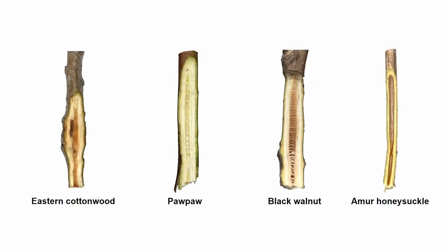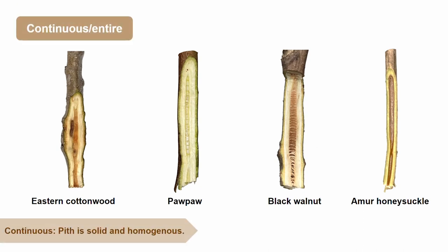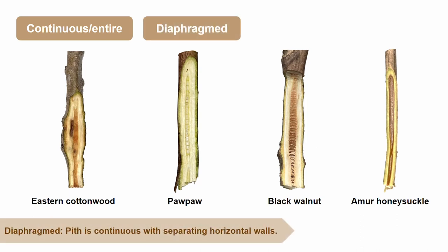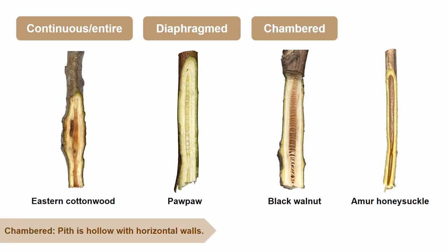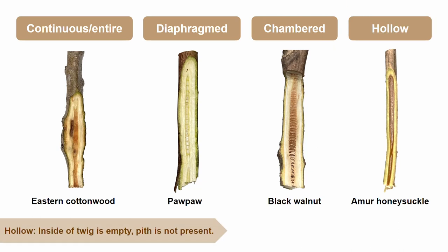There are four different types of pith found in twigs. The first is a continuous, otherwise known as entire pith, that is solid and uniform — cottonwoods have continuous piths. The next type is diaphragm pith, which is solid but has thin horizontal walls inside of it; this can be found in pawpaw twigs. Next is chambered pith, which is hollow but has thin horizontal walls — this can be found in black walnut twigs. Lastly, we have hollow piths, which are empty with no horizontal walls — amur honeysuckles have hollow piths.